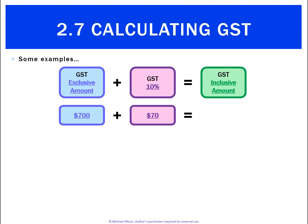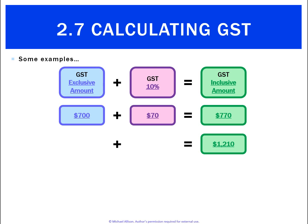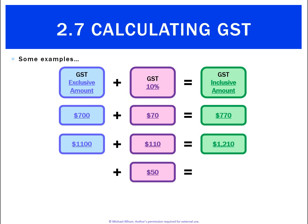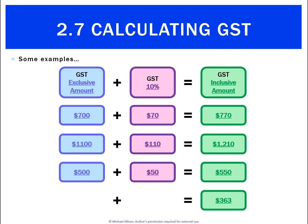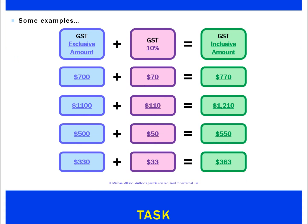Here are some basic examples. If the exclusive amount is $700 plus GST of $70, that's an inclusive amount of $770. If given an inclusive amount of $1,210, divide by 11 to get GST of $110, and the exclusive amount is $1,100. If the GST is $50, then exclusive is $500 and inclusive is $550. Lastly, an inclusive amount of $363 divided by 11 gives GST of $33, and the exclusive amount is $330.